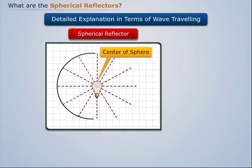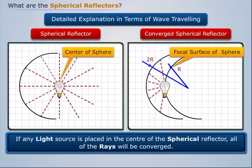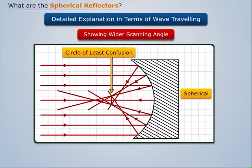If any light source is placed in the center of the spherical reflector, all of the rays will be converged. These type of reflectors have a wider scanning angle than the paraboloid because of symmetry.